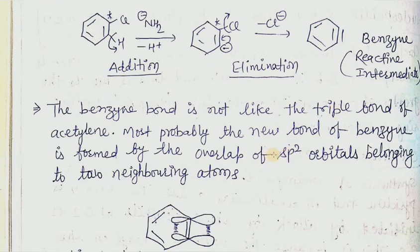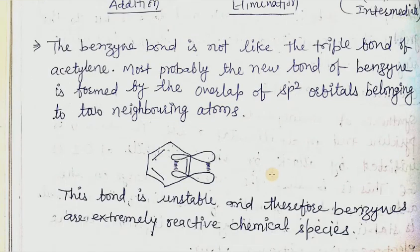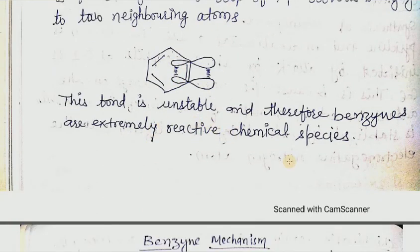Most probably the new bond of benzyne is formed by the overlap of sp2 hybrid orbitals belonging to the neighboring atoms. This is the process of formation of this second pi bond. This bond is unstable, and therefore benzynes are extremely reactive chemical species.